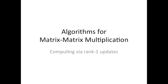Now we're going to look at what happens if we order the P loop on the outside. What we're going to see is that this computes the matrix-matrix multiplication by performing a sequence of rank-one updates — one rank-one update with each pair of a column of A and the corresponding row of B.